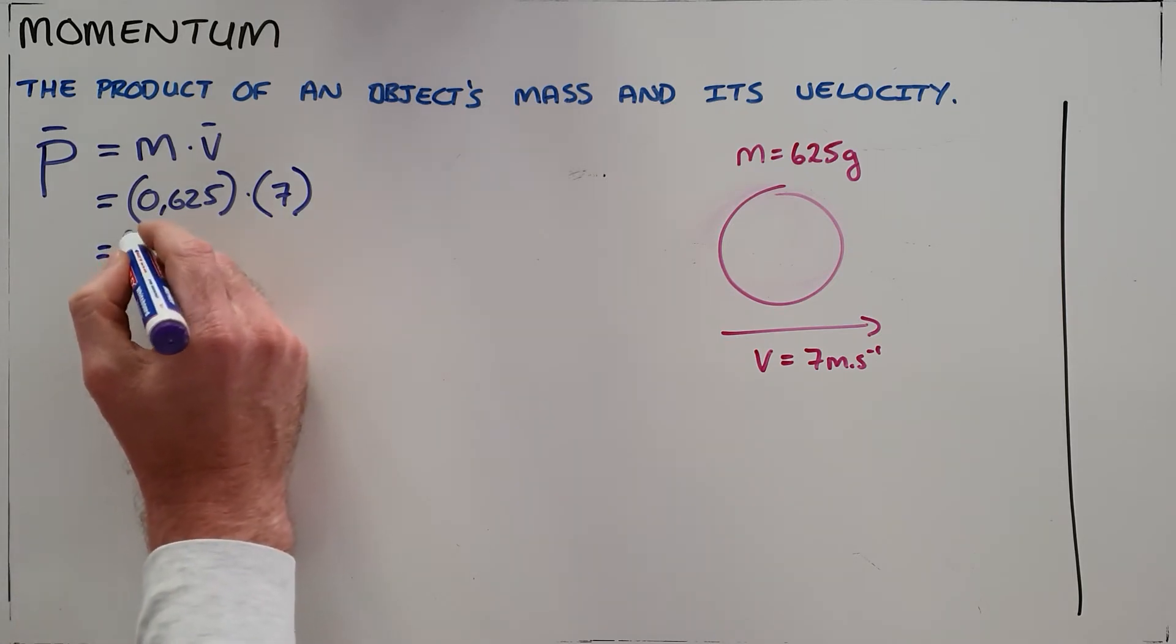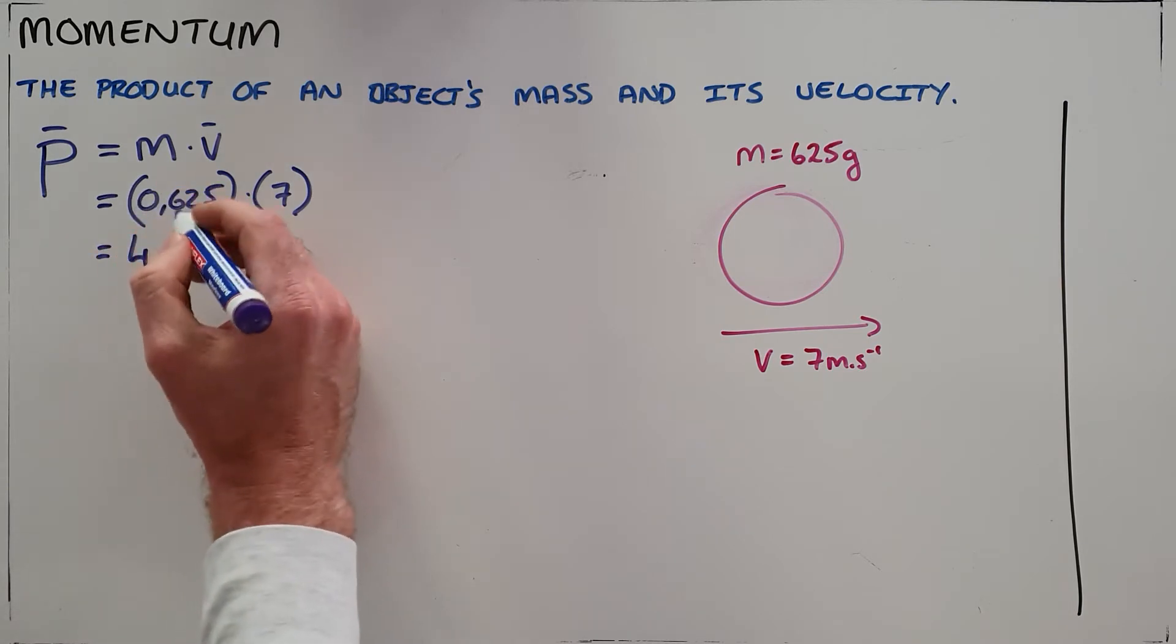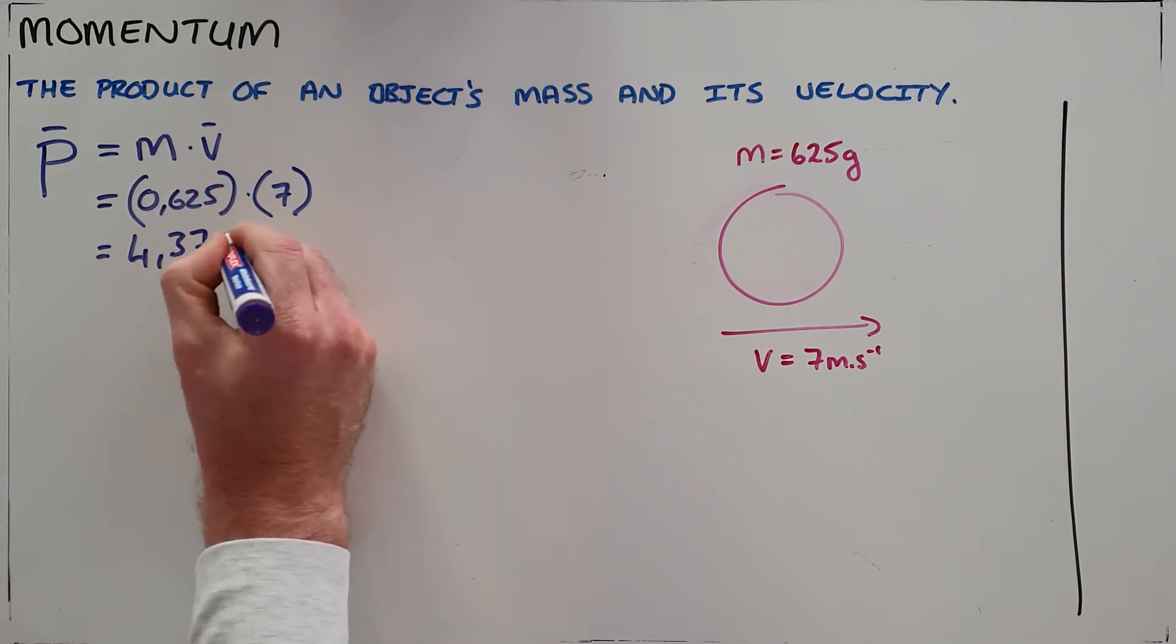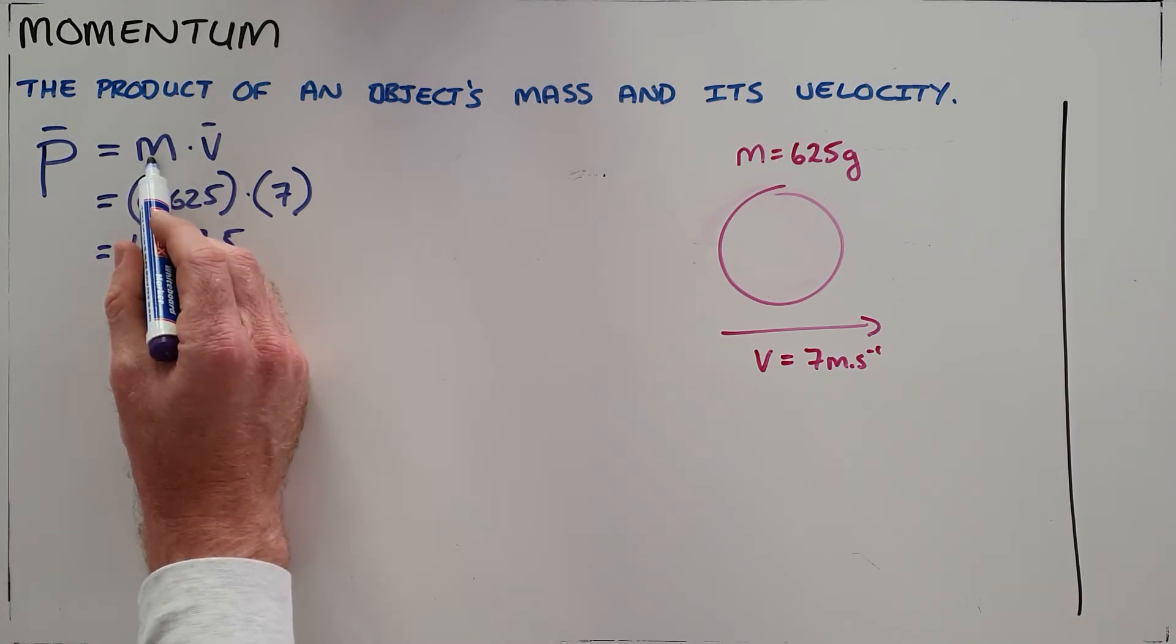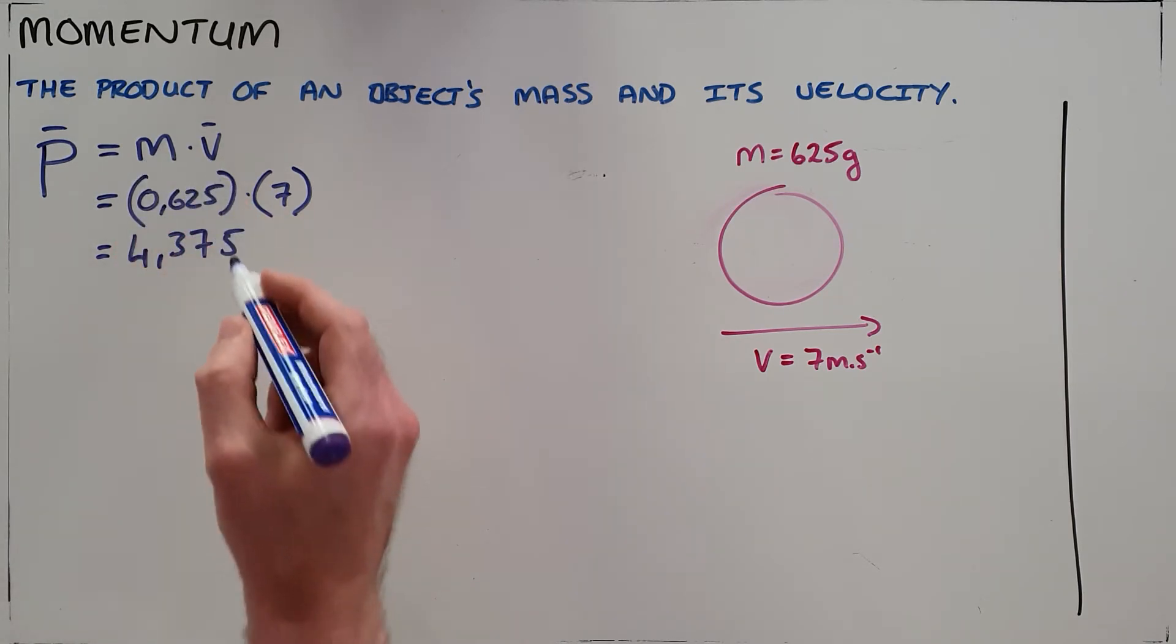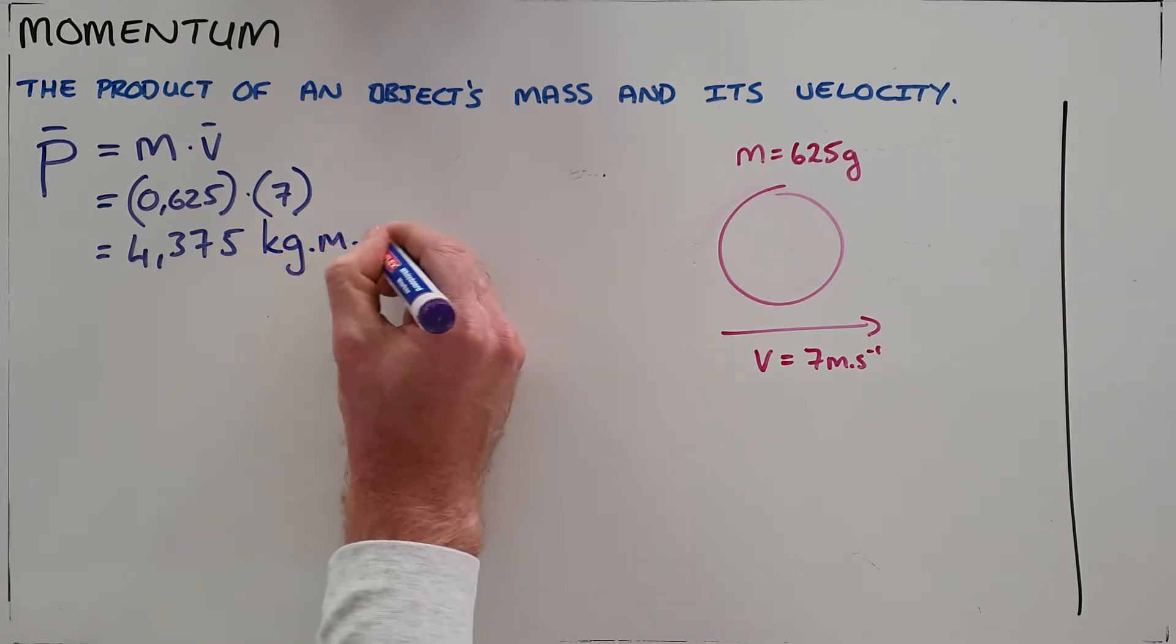And we can see then that this object has an initial momentum of 4.375. And as we can see, the units here would be the units of mass multiplied by the units for velocity. That is then kilogram meters per second.